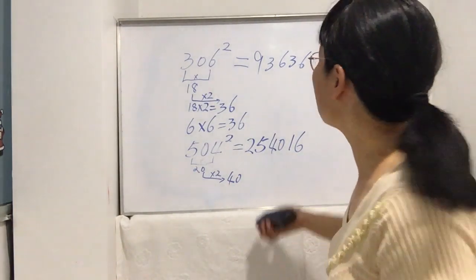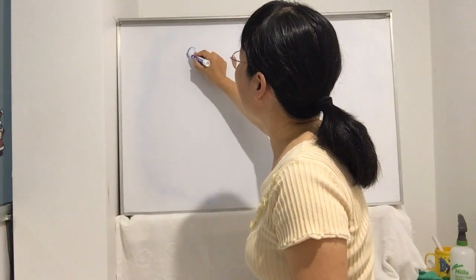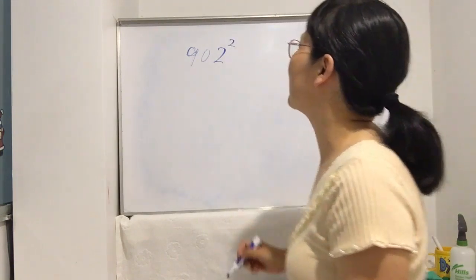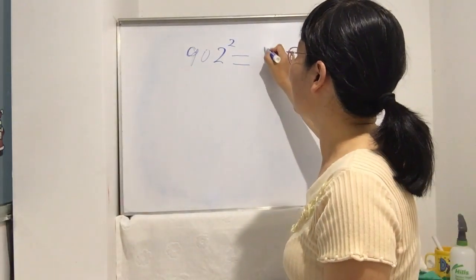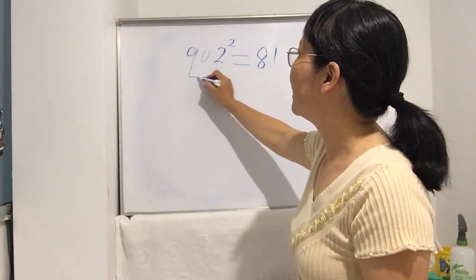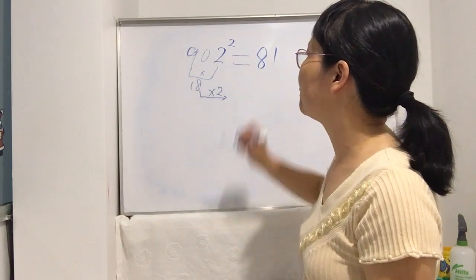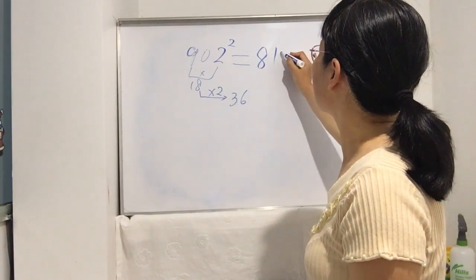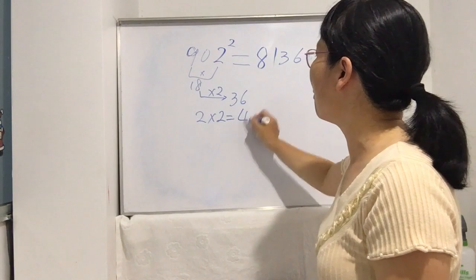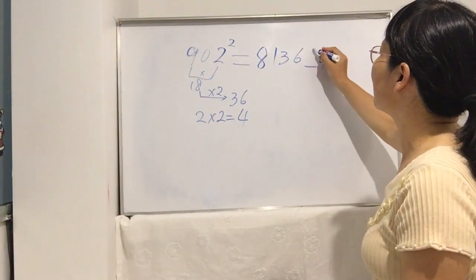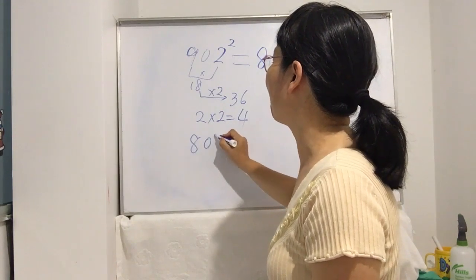But sometimes it's not always the same. Let's see another example: 902 squared. Same technique — nine times nine is eighty-one, write it down. Second step: nine times two is eighteen, double it — thirty-six, write in the middle. Last step: normally two times two is four, but this time you cannot just write four — you need to put a zero here first, then four. That's the exact answer.